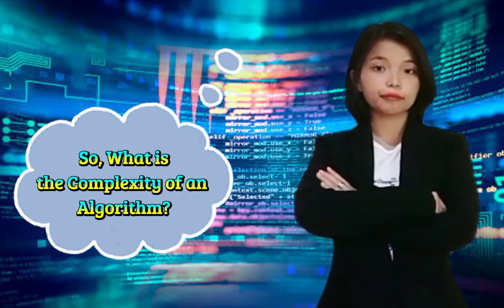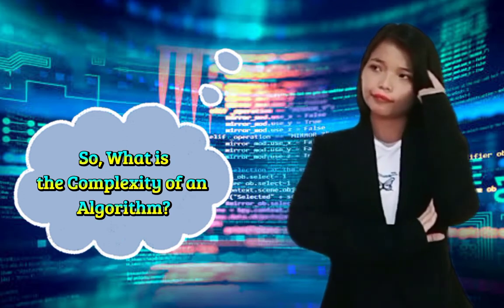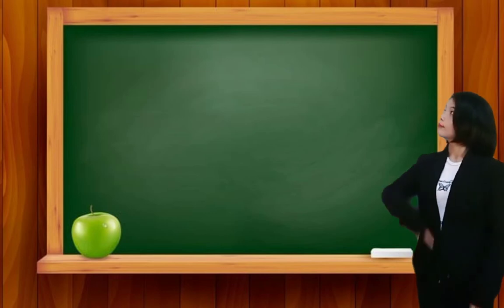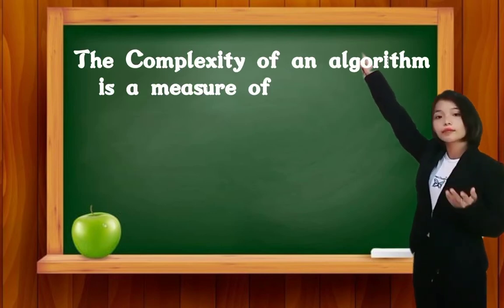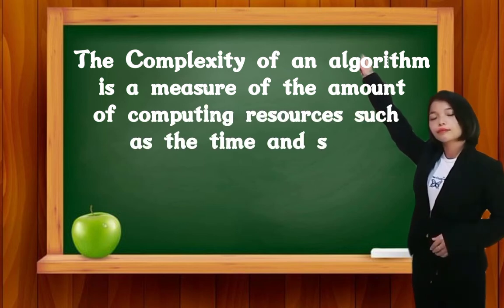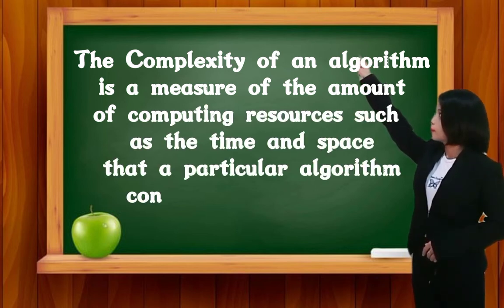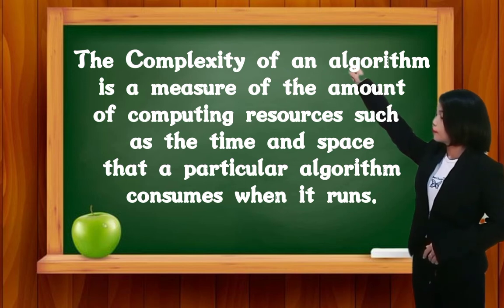After learning what is an algorithm, we will now move on to the complexity of an algorithm. So, what is the complexity of an algorithm? The complexity of an algorithm is a measure of the amount of computing resources, such as the time and space that a particular algorithm consumes when it runs.